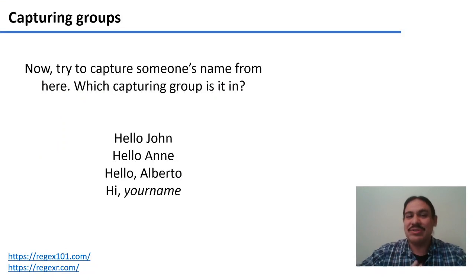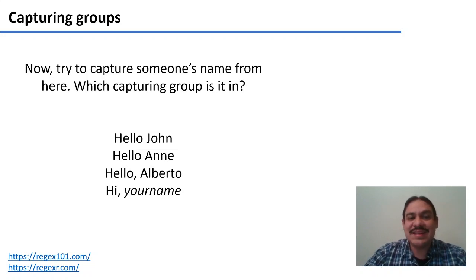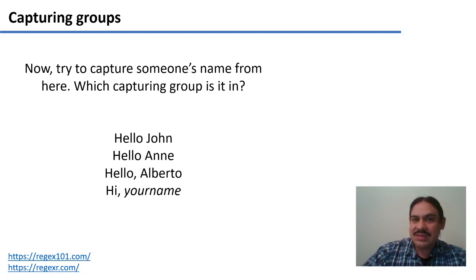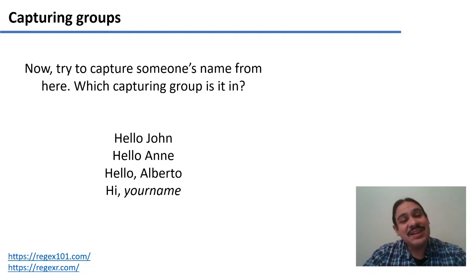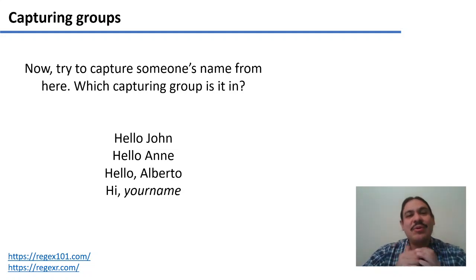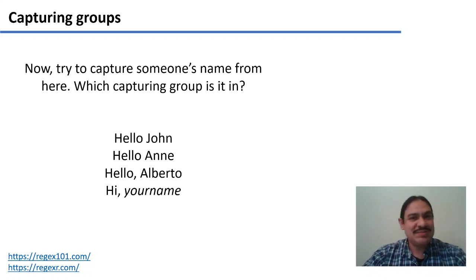Now you give it a try again. This is the more complex expression from the last video. You need to account for the fact that a comma is there sometimes and sometimes it's not, and sometimes the greeting is 'hello' or 'hi'. How are you going to capture the name? Pause, and then unpause for the solution.